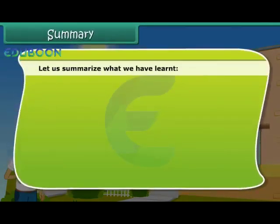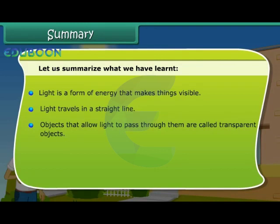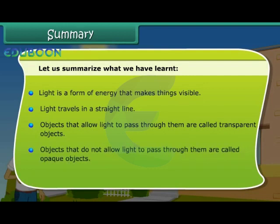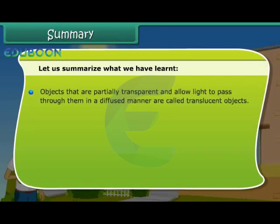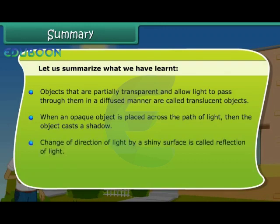Light is a form of energy that makes things visible. Light travels in a straight line. Objects that allow light to pass through them are called transparent objects. Objects that do not allow light to pass through them are called opaque objects. Objects that are partially transparent and allow light to pass through them in a diffused manner are called translucent objects. When an opaque object is placed across the path of light, the object casts a shadow. Change of direction of light by a shiny surface is called reflection of light.